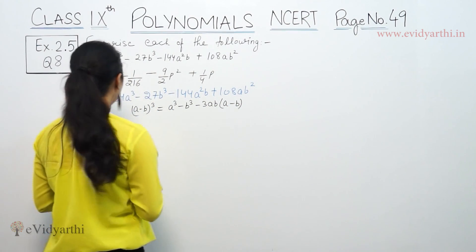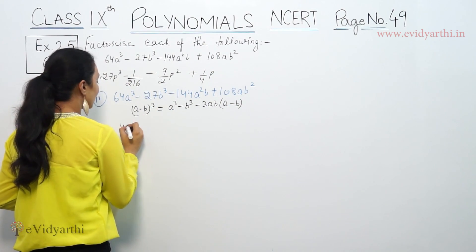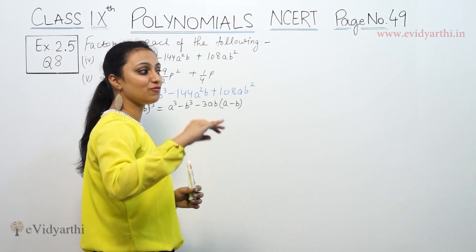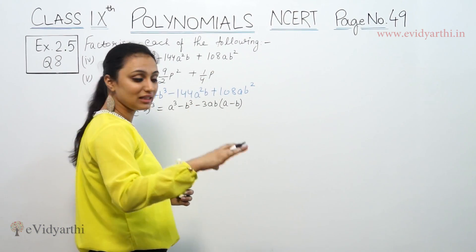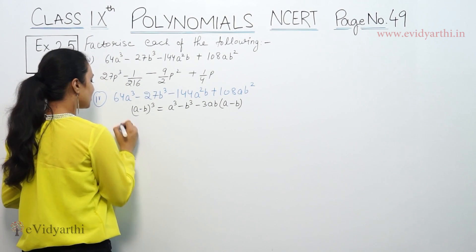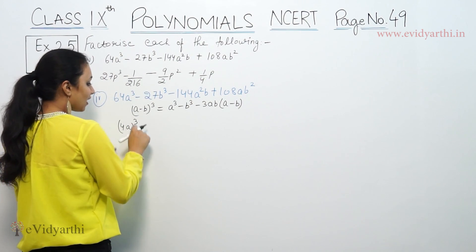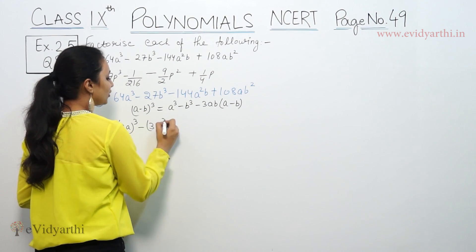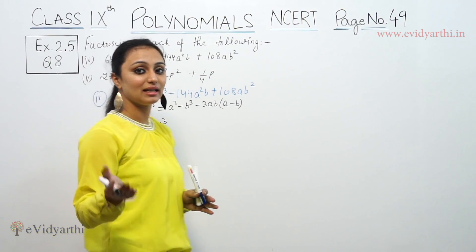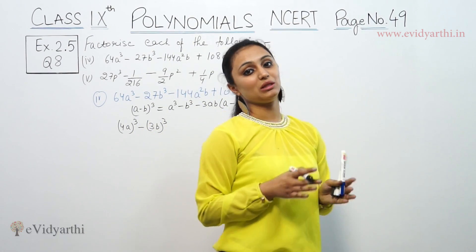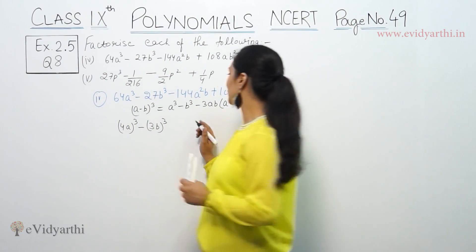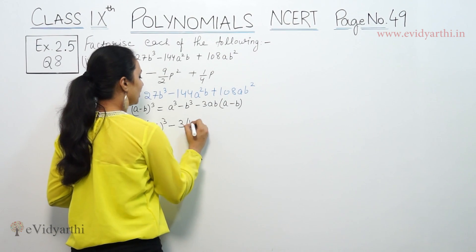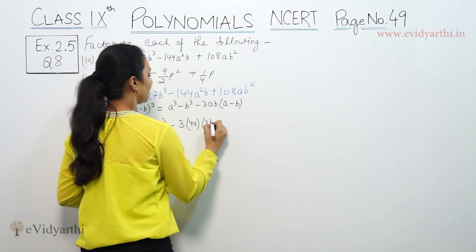In this case, if we write 64a³, what cube is 64? 4 cubed is 64 — 4×4 = 16, 16×4 = 64. So 64a³ can be written as (4a)³. We identify a = 4a and b = 3b.